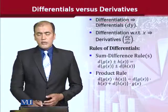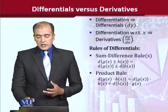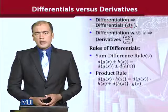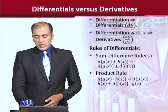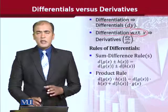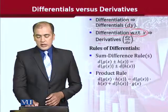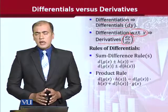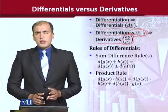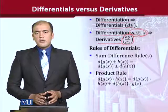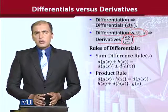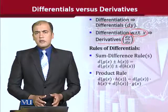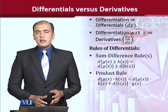This is another small difference that we must remember. In differentiation, we are actually taking the differentials, for example dy. But when we say we are doing differentiation with respect to some variable, then it is a derivative which is the ratio of dy and dx. When we say differentiation alone, this is a differential. But when we say differentiation with respect to some variable, then this is a derivative.